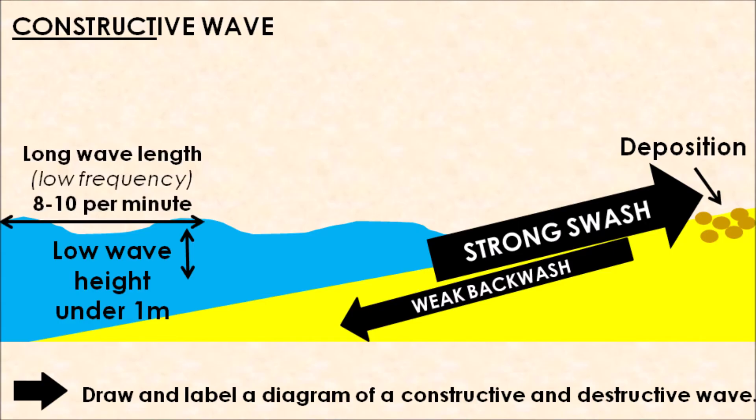Constructive waves are also known for having very long wavelengths, and they occur at a very low frequency. What that means is that the amount of waves approaching the beach is a smaller amount compared to a destructive wave. On average, we will have 8 to 10 constructive waves approaching the beach per minute.